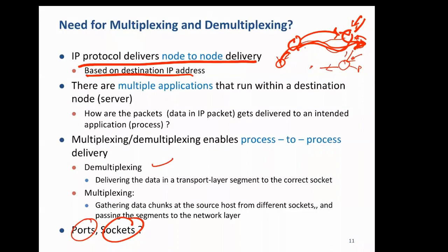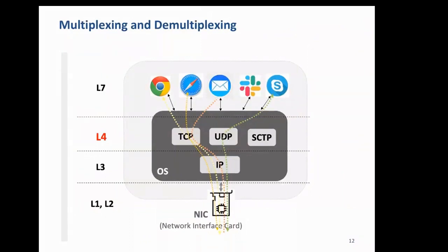We use ports and sockets for this. In socket programming, you create a socket, perform the transfer, and to create a socket you use a free and available port number. You fill the data in and when the data transfer is done, you close the socket. Multiplexing and demultiplexing are shown here: packets correspond to an IP address, and then must go to the appropriate application based on the port number.